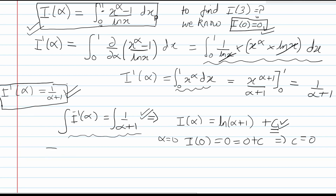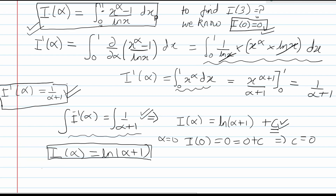I can now conclude that I of alpha equals ln of alpha plus 1. Therefore the job is done. The initial question asked for I of 3, so putting alpha equal to 3 gives I of 3 equals ln 4 — that is the required answer. This was a different approach from conventional substitution, partial fractions, or integration by parts. Keep this technique in mind, as such questions can appear in JEE Mains and JEE Advanced given the incrementing level of the papers. That was the first question; let's move on to the next.